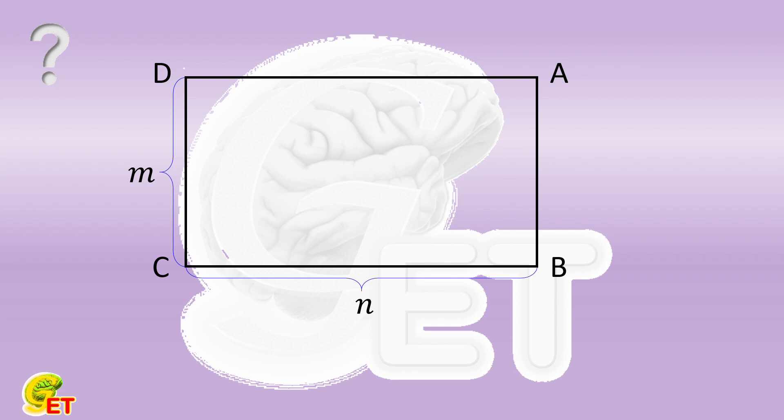We select one point on each of its four sides, denoted as W, X, Y and Z. A new quadrilateral is constructed by connecting these four points.